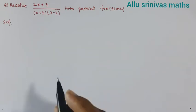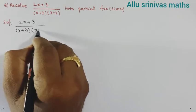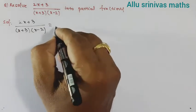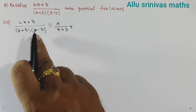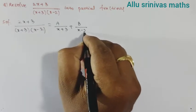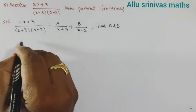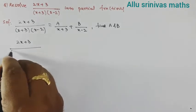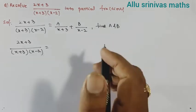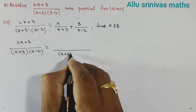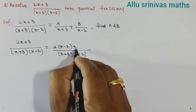The solution is: it can be written as (2x + 3) / [(x + 3)(x − 2)]. Since x + 3 is a non-repeated irreducible factor, it forms A/(x + 3), and x − 2 is a non-repeated irreducible factor forming B/(x − 2). Taking the LCM of the two fractions, the LCM is (x + 3)(x − 2), and it can be written as A times (x − 2) plus B times (x + 3).